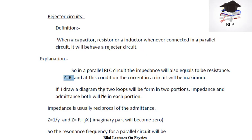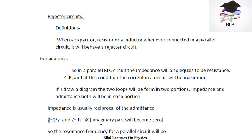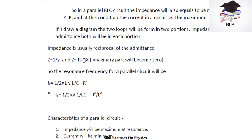If I draw a diagram, the two lobes will be in two portions: impedance and admittance. So both terms will be in each portion. Phase angle will be related to impedance and admittance. As we know, impedance is reciprocal to the admittance. Admittance is denoted by Y and impedance by Z, so Z equals one over Y. Our impedance Z equals R plus JX, where J is our imaginary part. The imaginary part will be equal to zero, and if that term equals zero, then Z equals R, and current will be minimum.